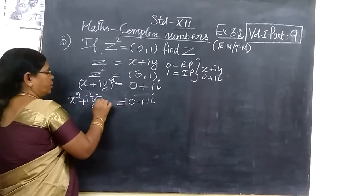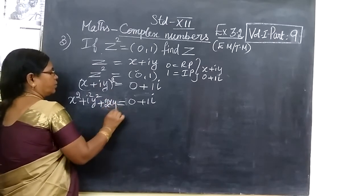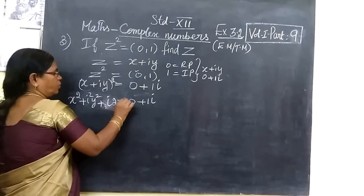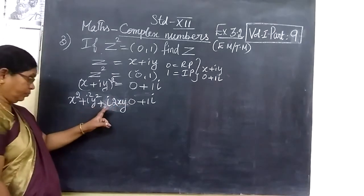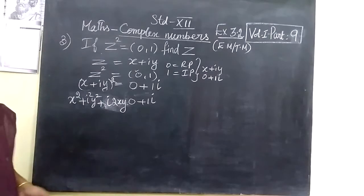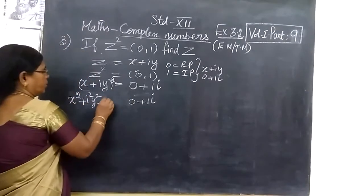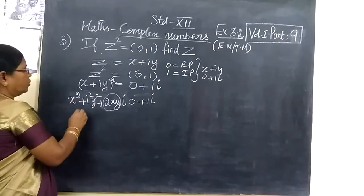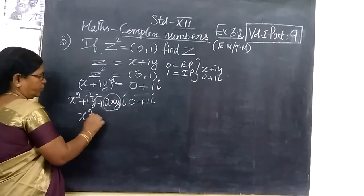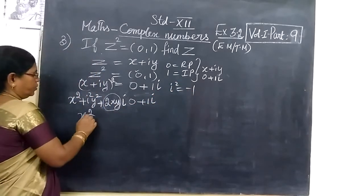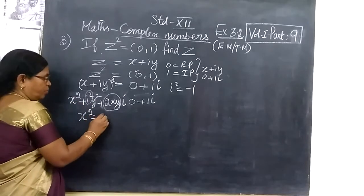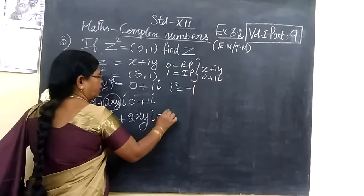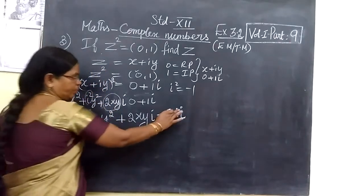Then we have 2ab, which is 2xy·i. Now we apply the fact that i² = −1. So i²y² becomes −y². Therefore the expansion becomes x² minus y² plus 2xyi, and this is equal to 0 plus 1i.